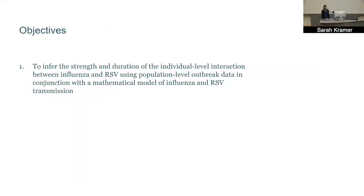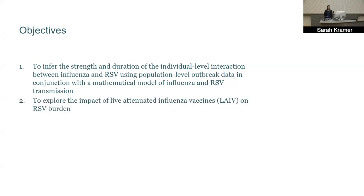The first objective of the work I'm presenting is to infer the strength and duration of the interaction between influenza and RSV using population-level outbreak data combined with a mathematical model of influenza and RSV transmission. Based on those results, we also want to explore the impact of live attenuated influenza vaccines on RSV burden — understanding when the protective effect versus the population-level susceptibility increase tends to dominate.